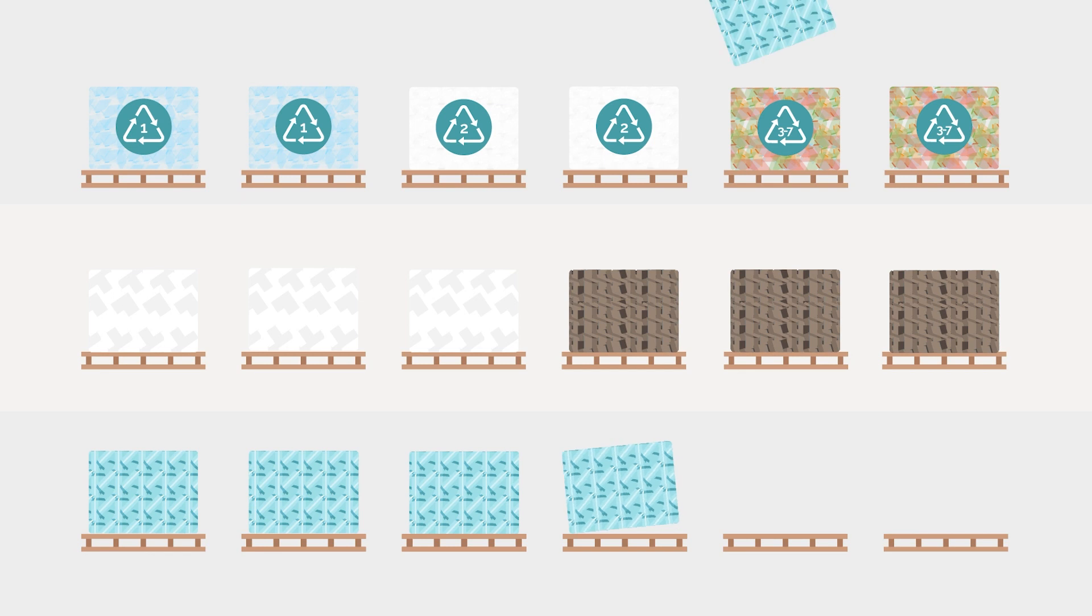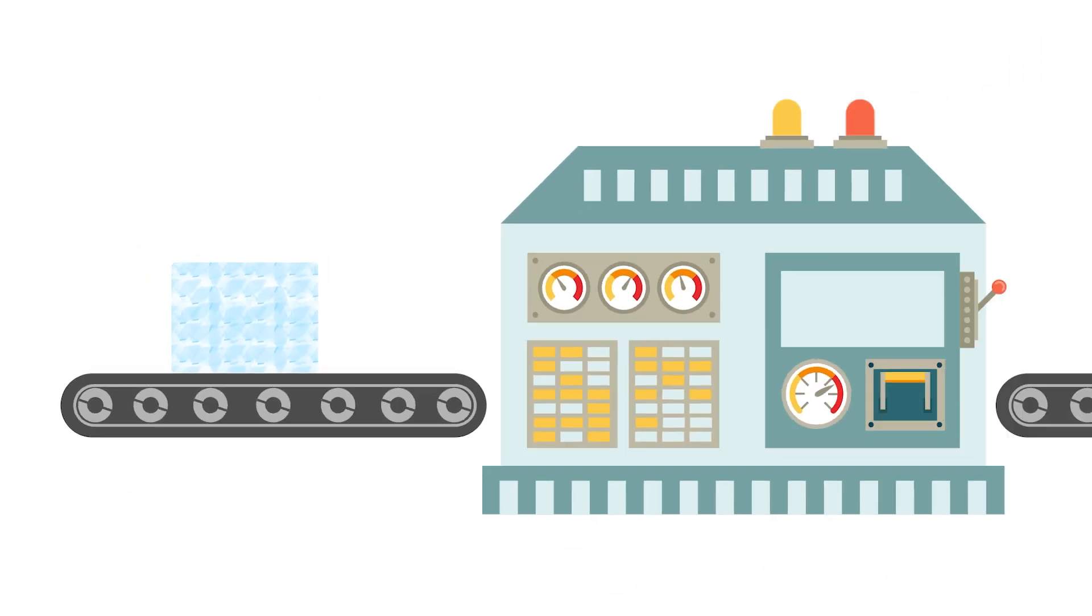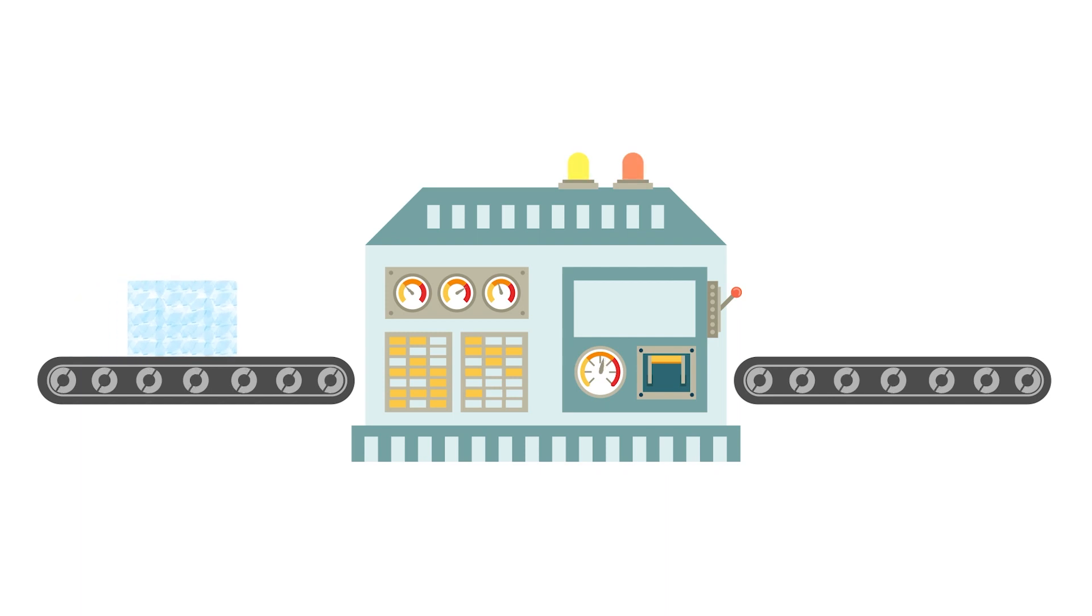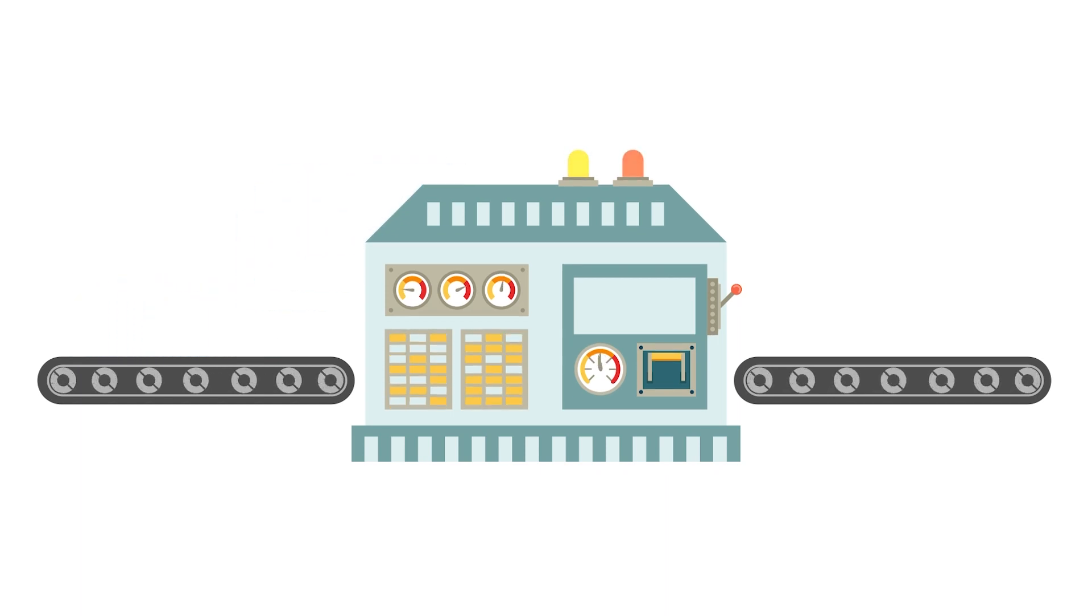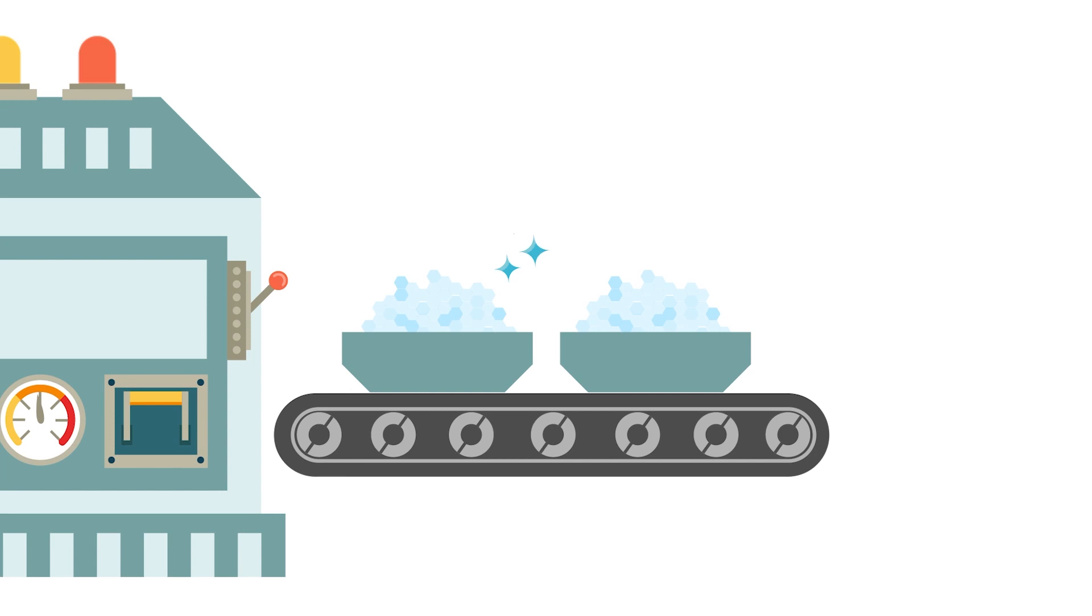What happens next depends on the material. After leaving the sorting facility, plastics go to a local recycling processor, where they're ground into tiny pieces. The result, fittingly called regrind, is then cleaned to remove residual paper, dust, and other contaminants.